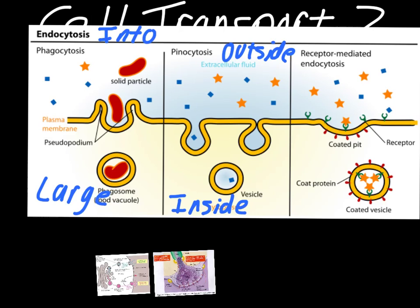What's happening here is the cell membrane basically wraps around whatever it is the cell is trying to take inside. Once that's in there, it's called a vesicle — the same thing that the Golgi apparatus is sending out into the cell. All a vesicle is is some kind of product that the cell needs that has a membrane wrapped around the outside of it. It's a way of transporting things inside the cell.